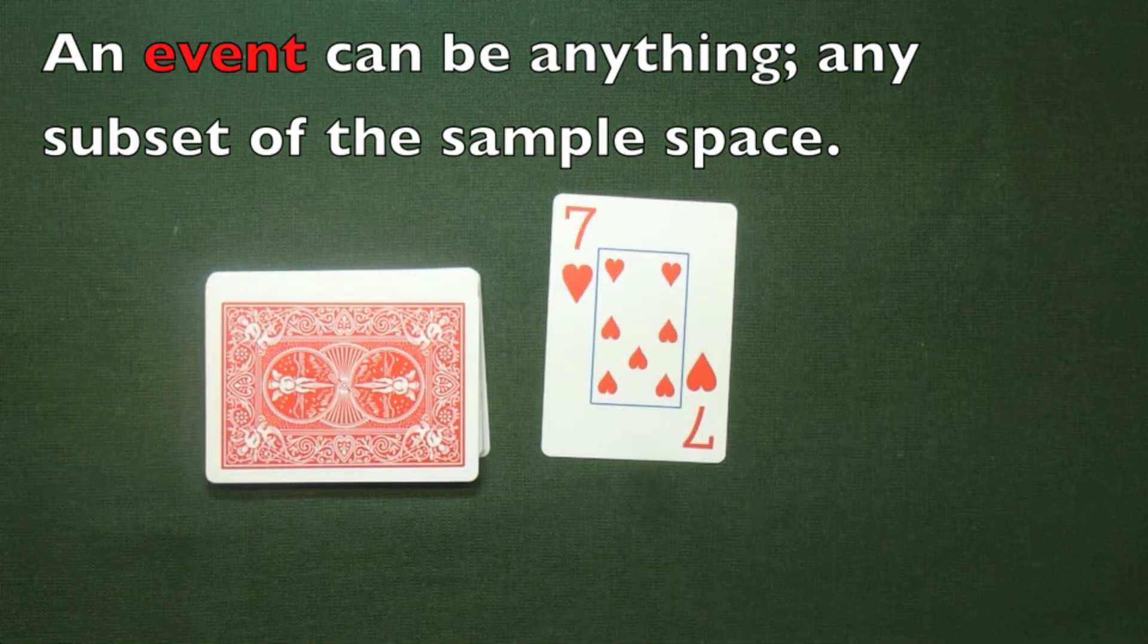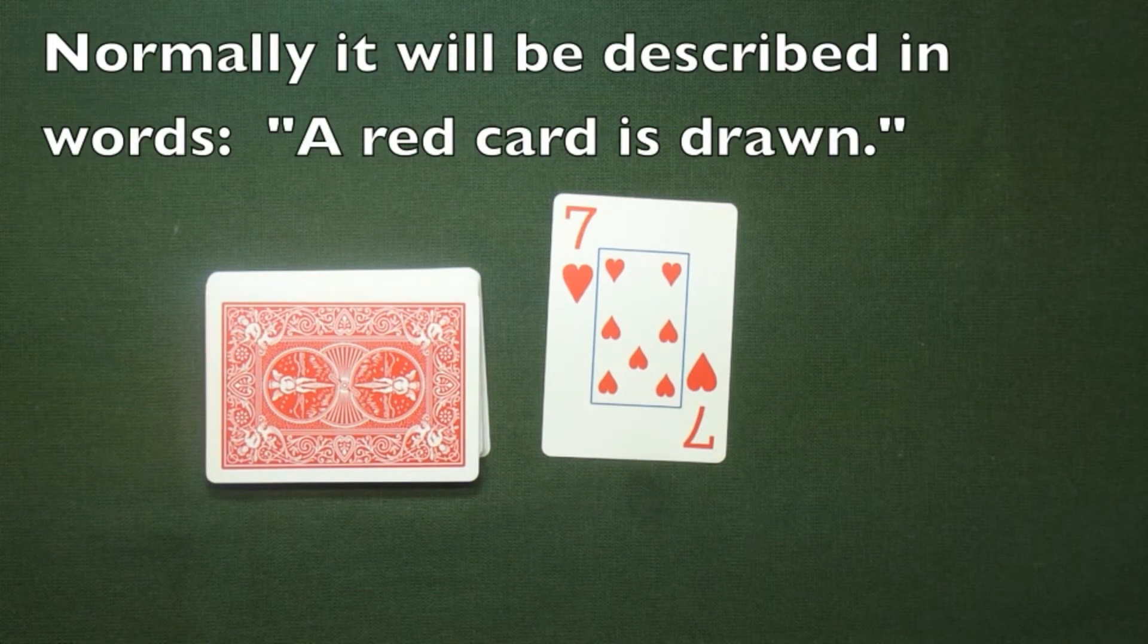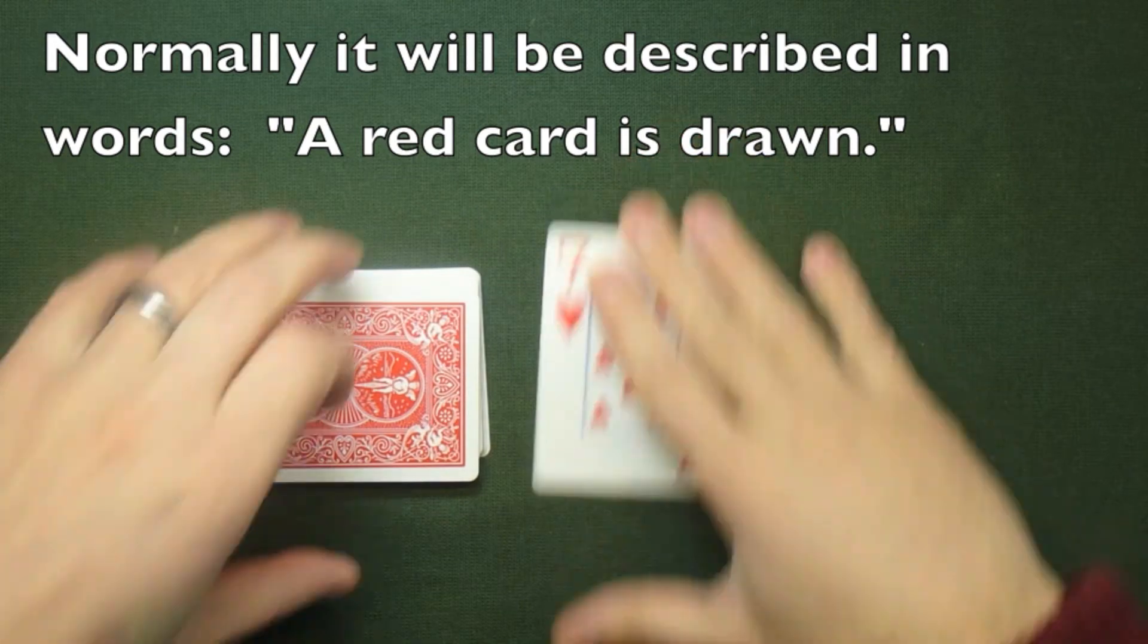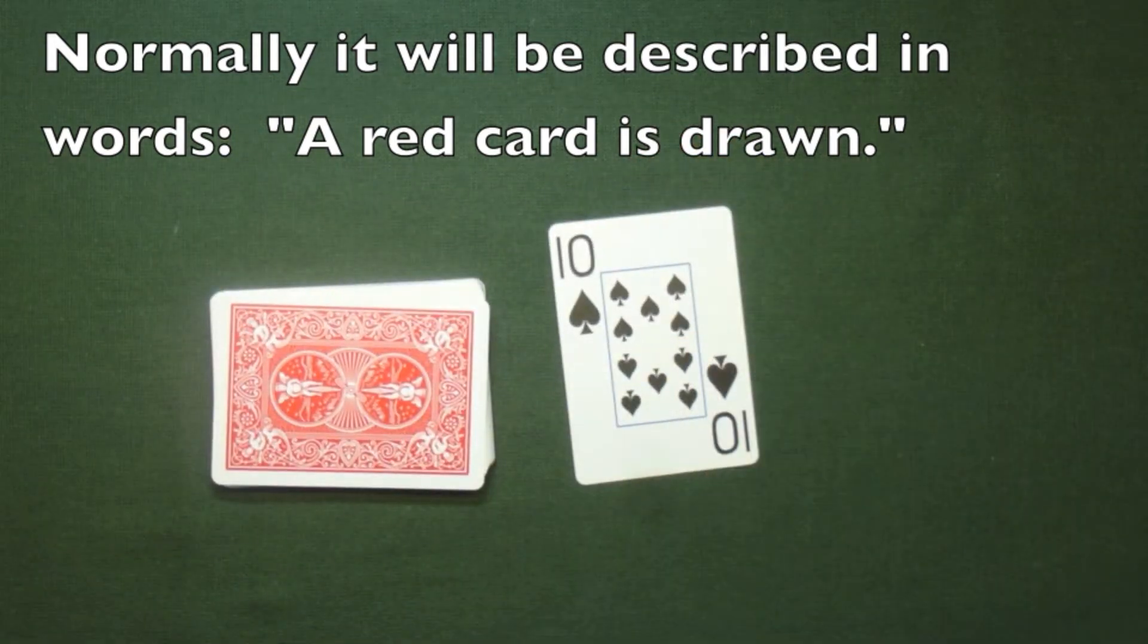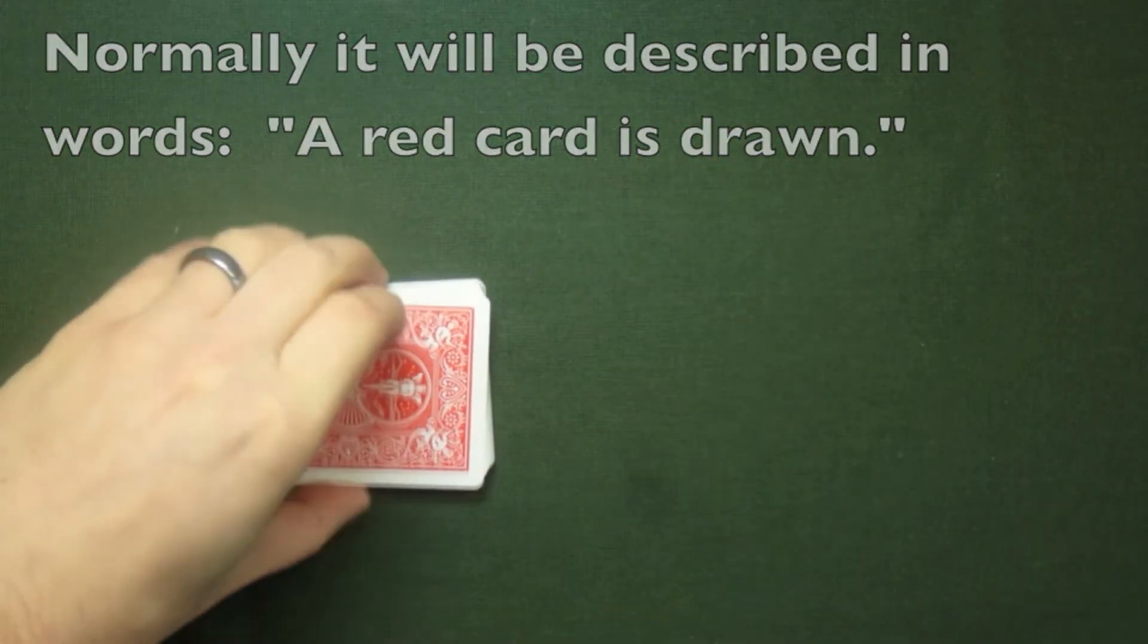The events can be anything. They're just going to be some subset of the sample space. So we describe this in words, like a red card is drawn. The seven of hearts would be an instance of this event, but the ten of spades is not.